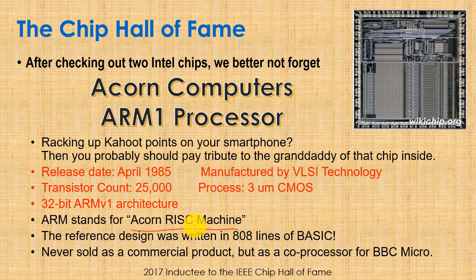This chip was released in 1985 in 3-micron CMOS technology with 25,000 transistors. Interestingly, the whole reference code for this architecture was written in just 808 lines of BASIC. It was never sold as a commercial product — it was just a co-processor for the BBC Micro. Later versions, ARMv2 and ARMv3, became more and more popular and somehow found their way into nearly every device we have at home.